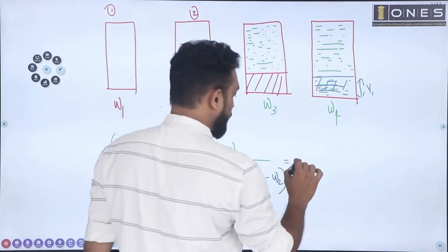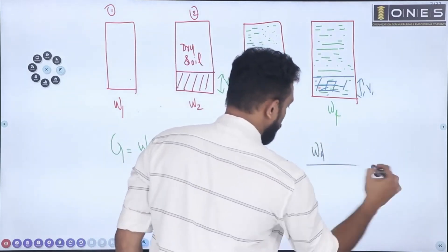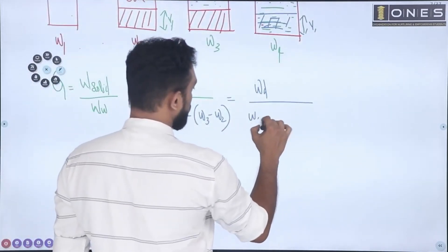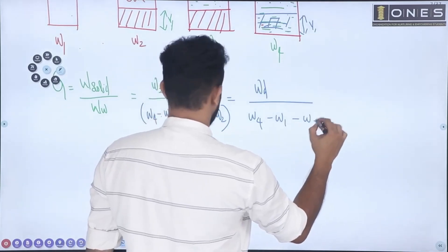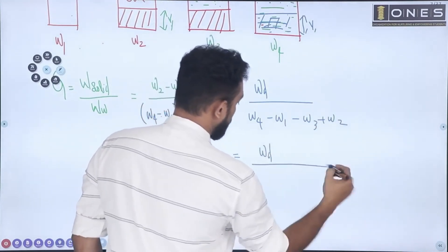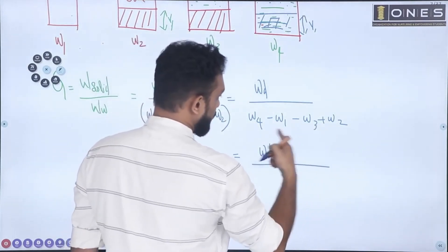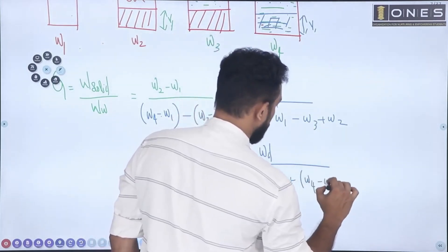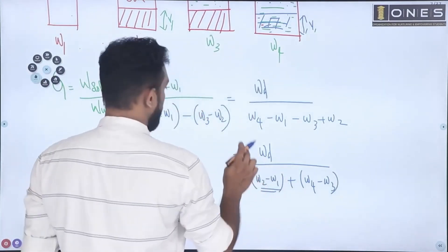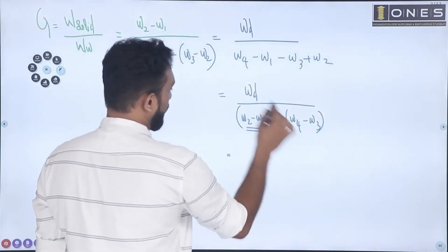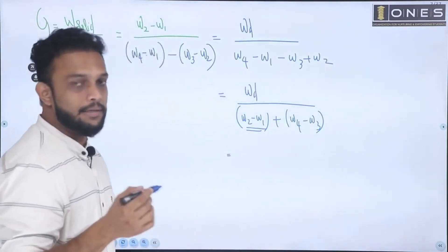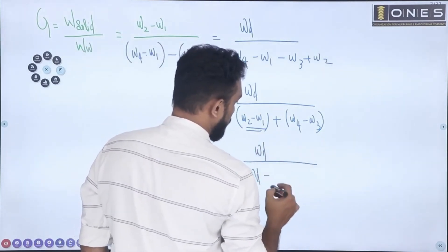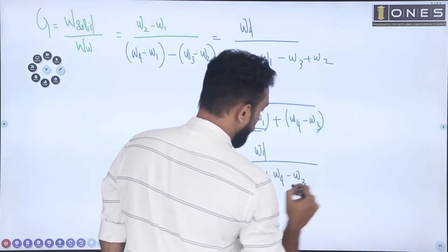Expanding the denominator: W4 minus W1 minus W3 plus W2. Rearranging, this becomes (W2 minus W1) plus (W4 minus W3). So the final equation for specific gravity is: Gs equals (W2 minus W1) divided by [(W2 minus W1) plus (W4 minus W3)]. This is the final equation. Specific gravity.